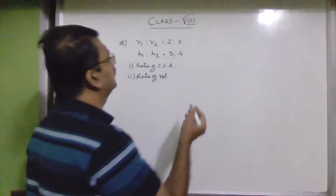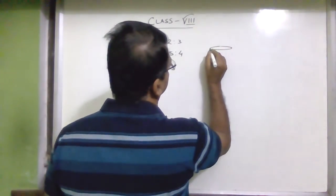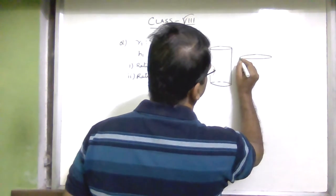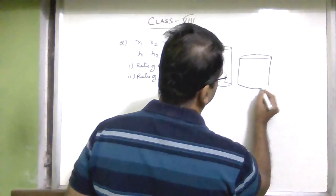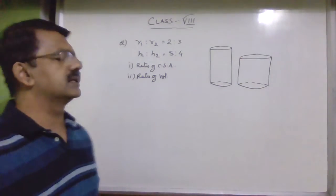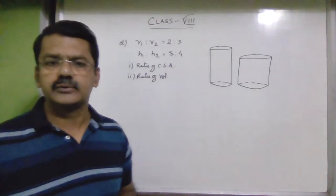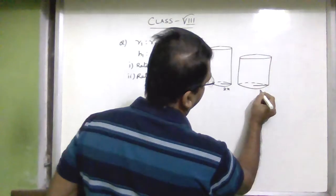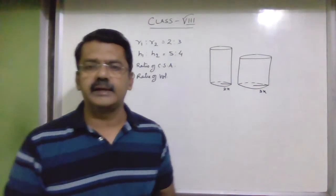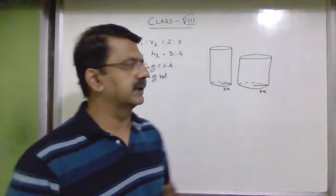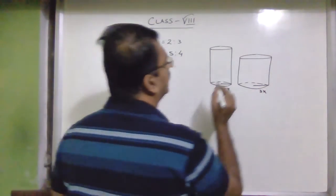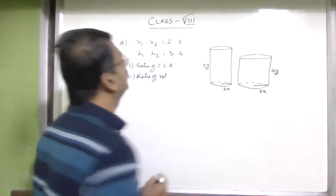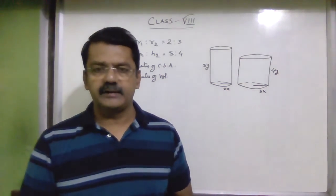Let the radius of the first cylinder be 2x and the second be 3x, since the ratio is 2:3. Let the height of the first be 5y and the second be 4y, since the ratio is 5:4.